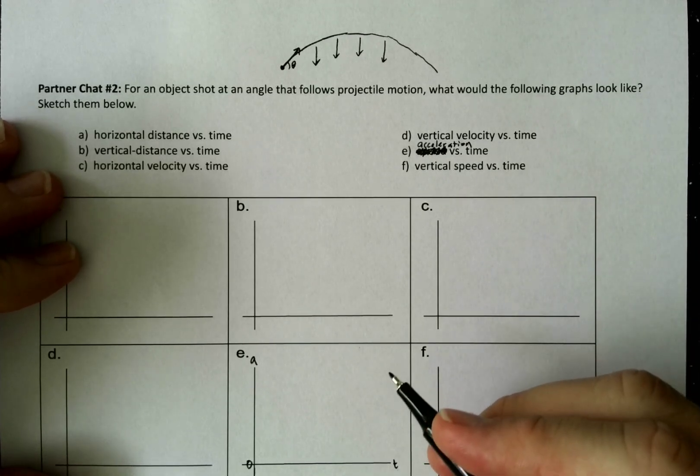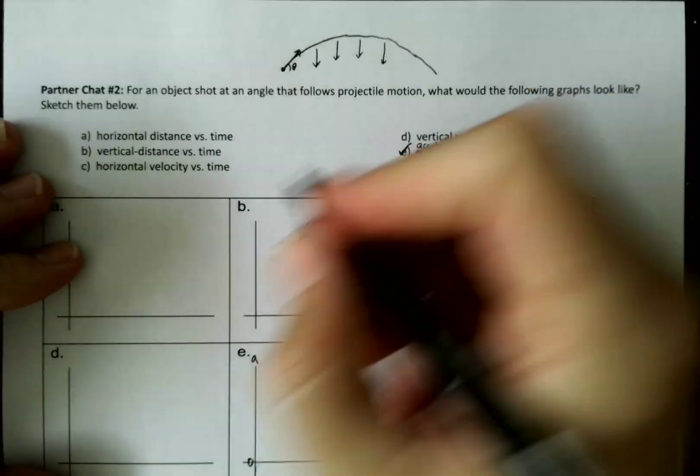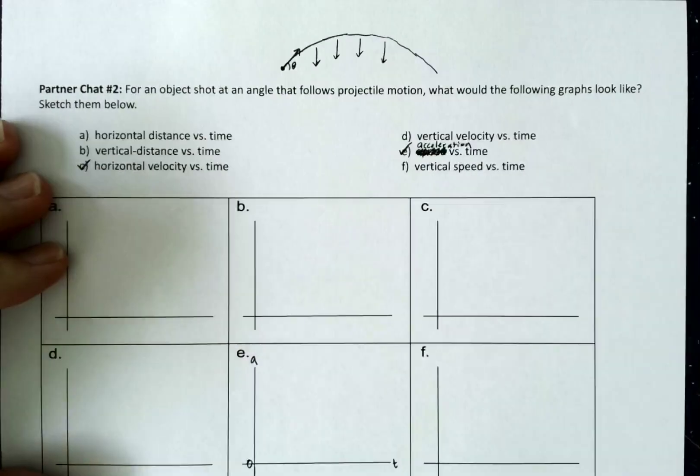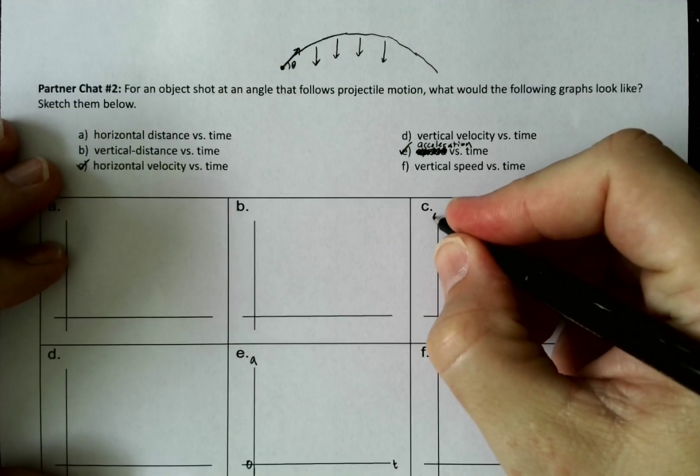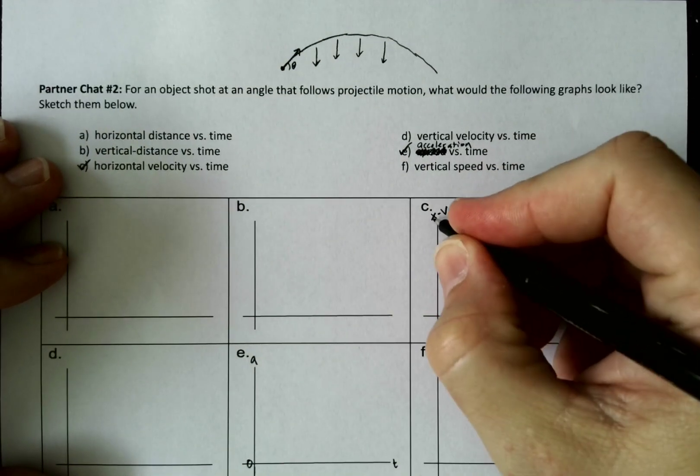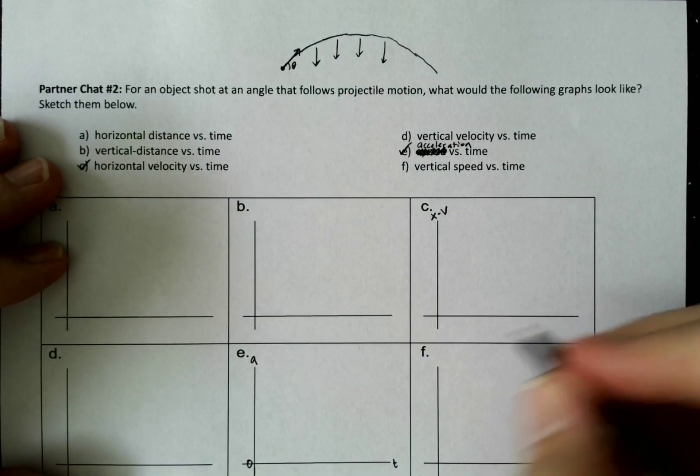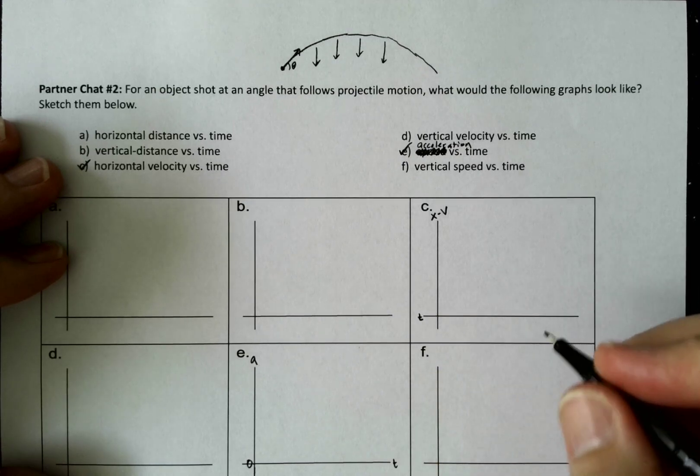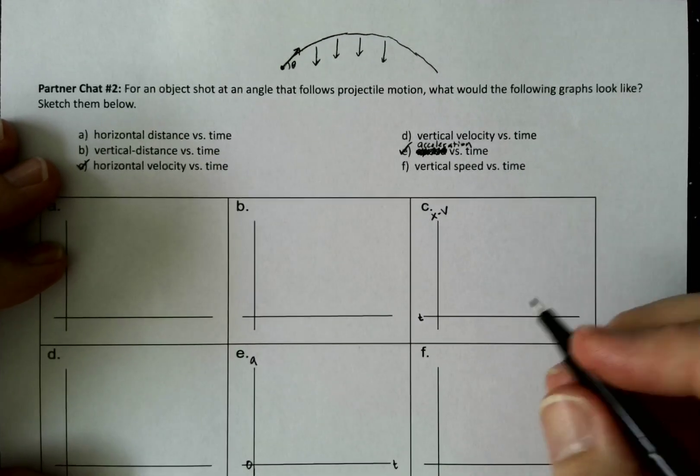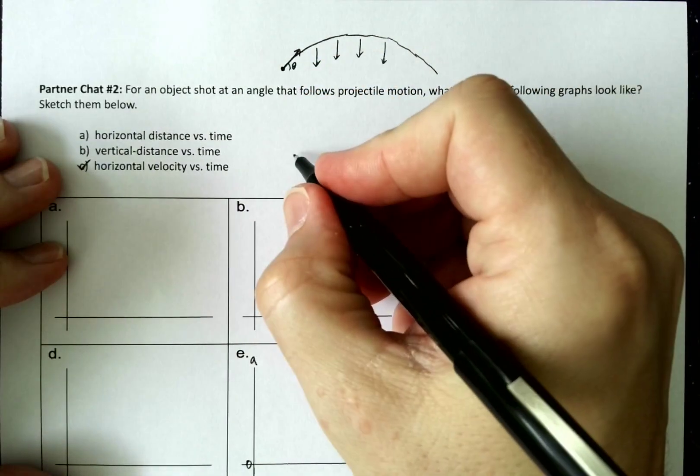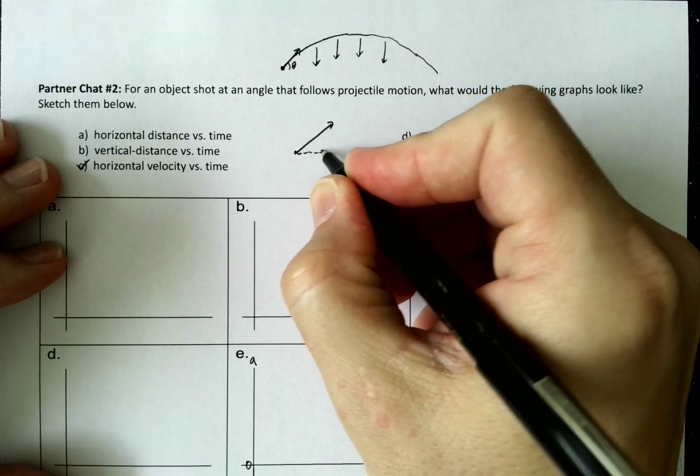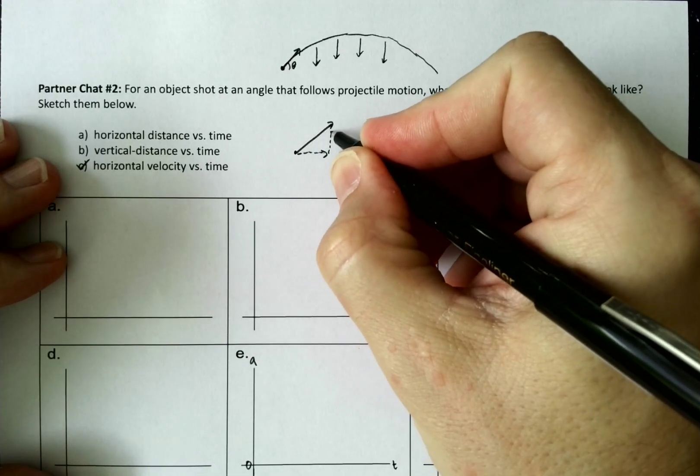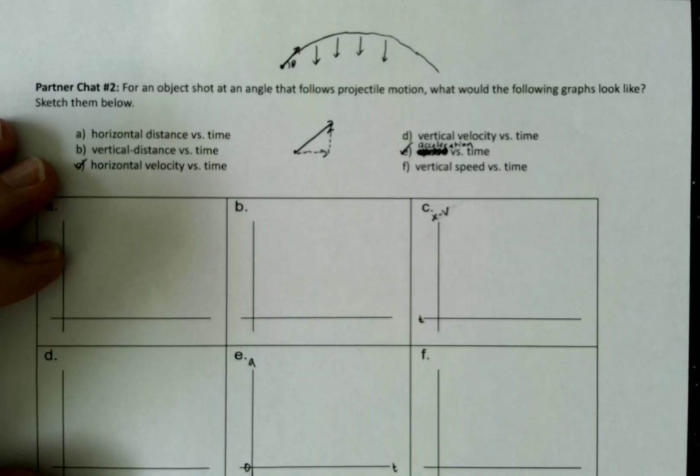Okay. The next easiest one, so we got E done. The next easiest one would be the horizontal velocity versus time. So that's letter C. So we're going to put the horizontal velocity, and then we'll put time here on the X-axis. And that one's easy because we know that when it's shot up at an angle, it has both the horizontal and vertical velocities.